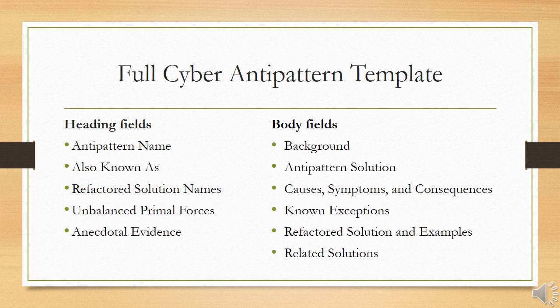The full cyber anti-pattern template has two main parts: a header and a body. The header gives a quick sense of the anti-pattern and the solution, inviting the reader to dive deeper. The body section contains the pattern details. The heading fields include: anti-pattern name, which is a unique pejorative noun phrase, with the intent to make this anti-pattern a well-known phenomenon, easily recognizable as an important security gap. Also known as: many anti-patterns are known by various names across different organizations, and some known or analogous names from different domains are listed here.